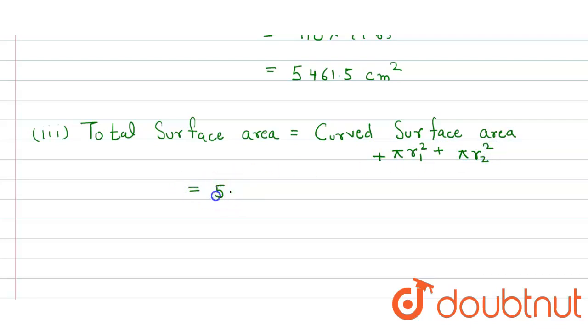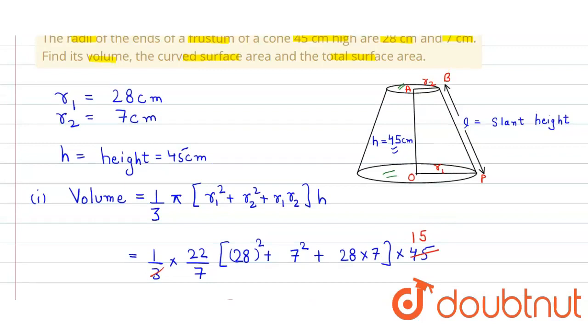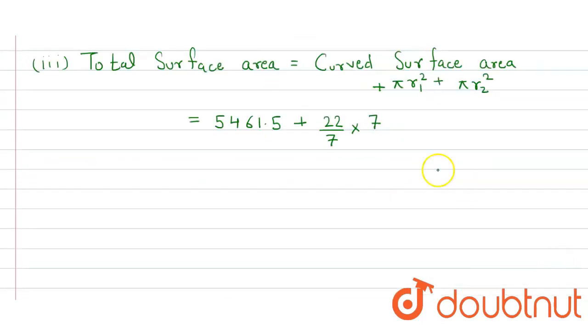Curved surface area we have already calculated, and that one is equal to 5,461.5 plus 22/7 × r₁, r₁ is equal to 28, so here it will be 28 × 28 plus 22/7 × 7 × 7.